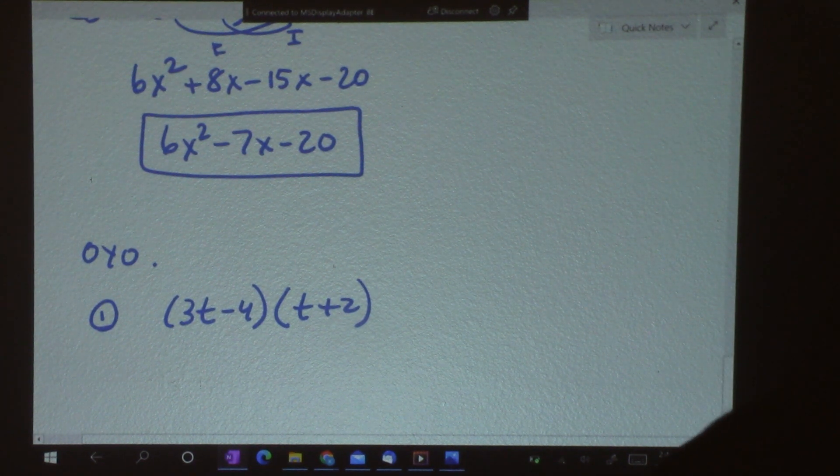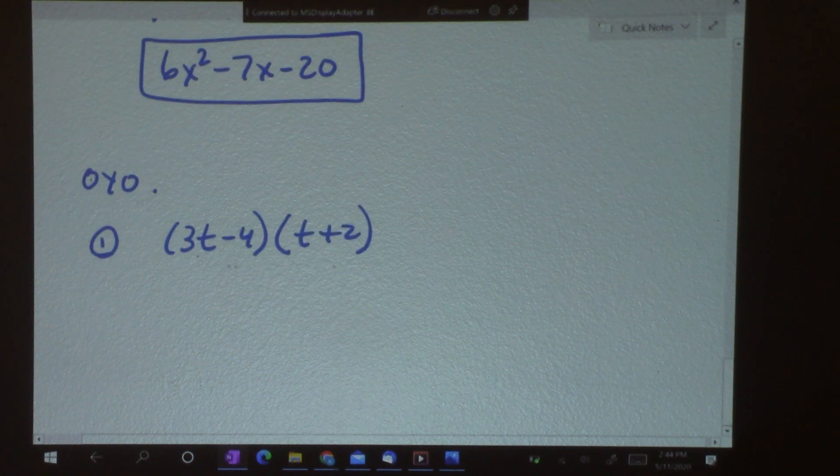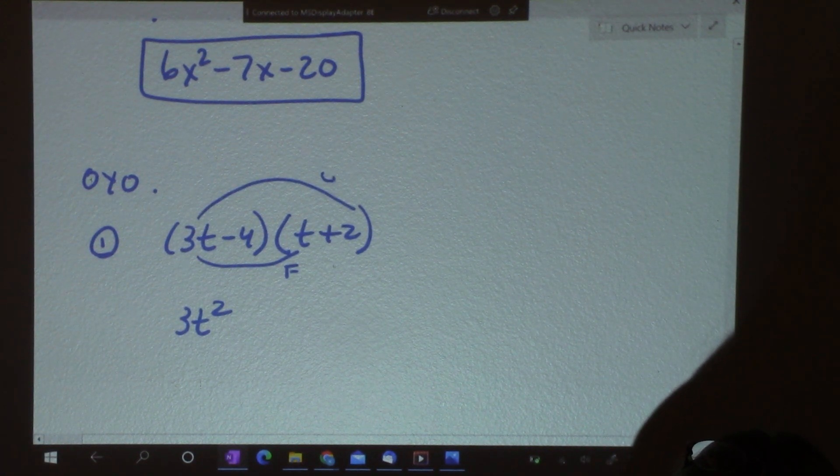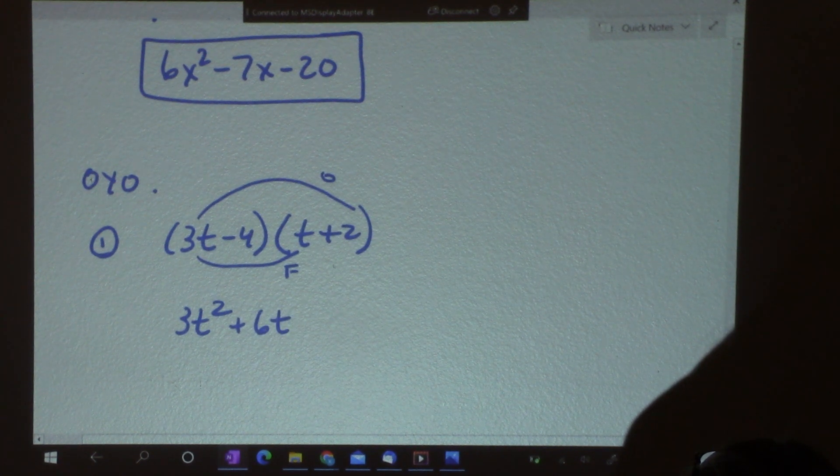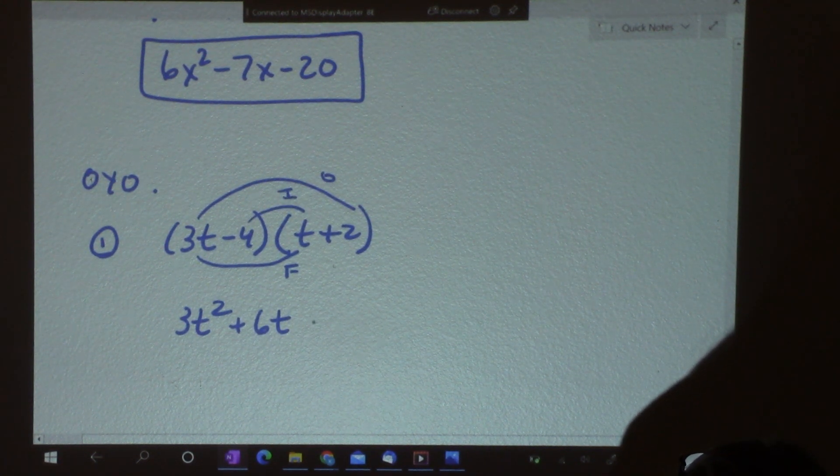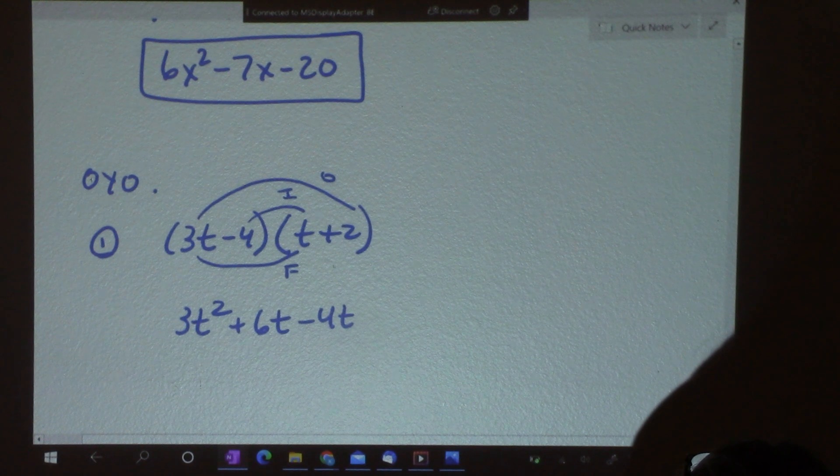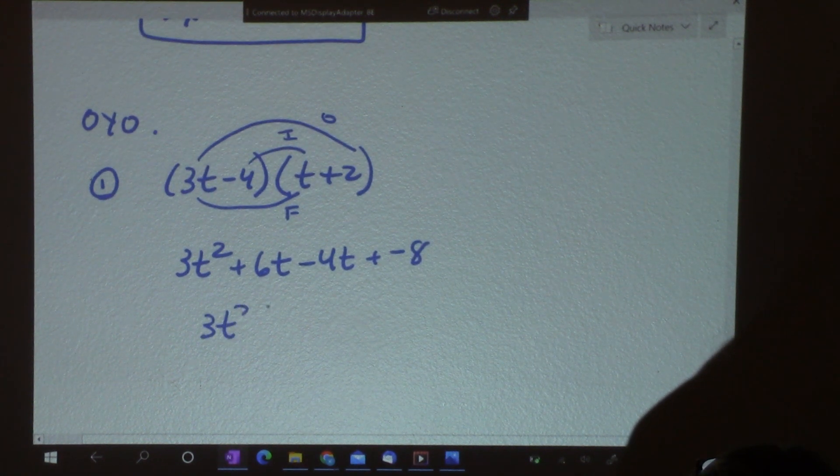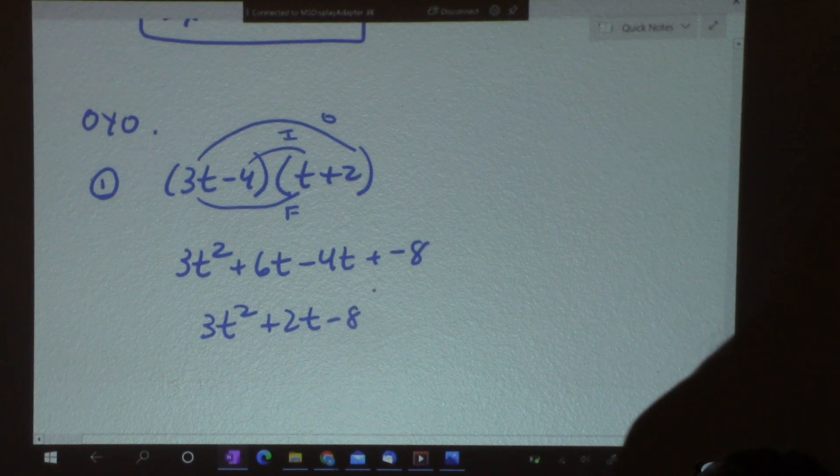Let's go over this. I've got 3t times t is 3t squared. And, 3t times 2, that's outside, is 6t. Then, inside, is negative 4t. And, negative 4 times 2 is negative 8. So, I get 3t squared plus 2t minus 8. And, that's my final answer.